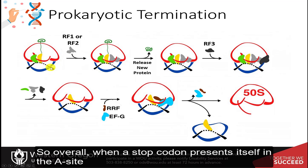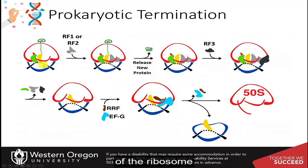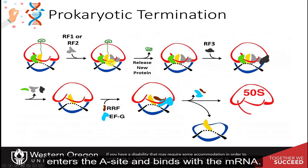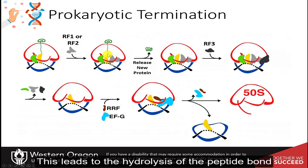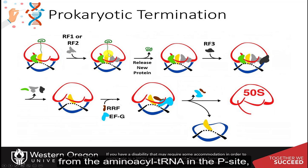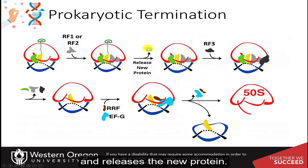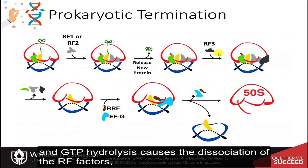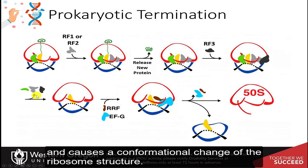So overall, when a stop codon presents itself in the A-site of the ribosome, RF1 or RF2 enters the A-site and binds with the messenger RNA. This leads to the hydrolysis of the peptide bond from the aminoacyl tRNA in the P-site and releases the new protein. Binding of RF3 and GTP hydrolysis causes the dissociation of the RF factors and a conformational change of the ribosome structure.